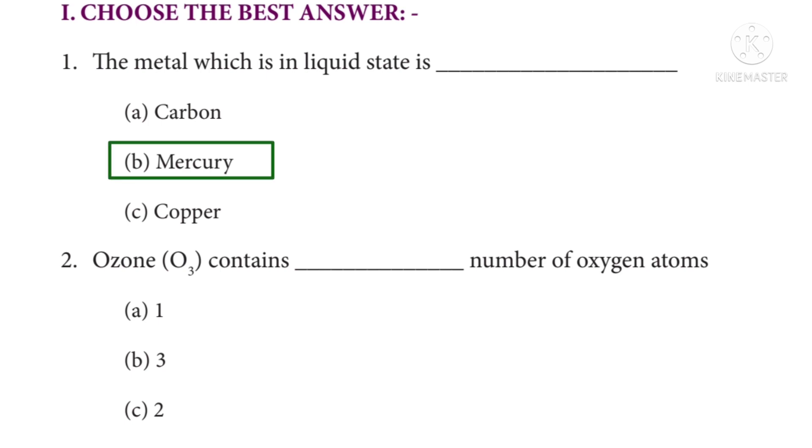Second question: ozone O3 contains dash number of oxygen atoms. Options: 1, 3, 2. The correct answer is option B, 3.